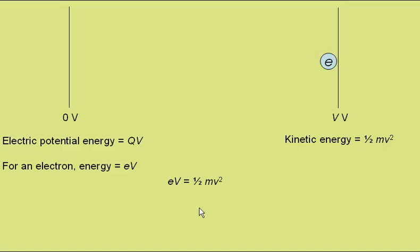We can rearrange this equation to give the speed of the electron equal to the square root of 2eV over m.